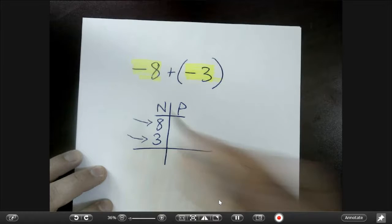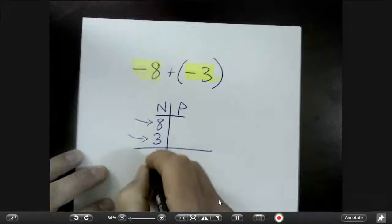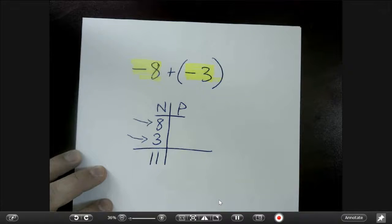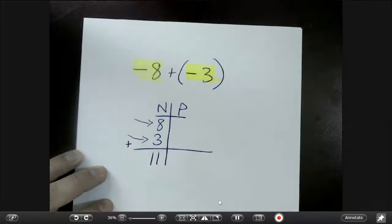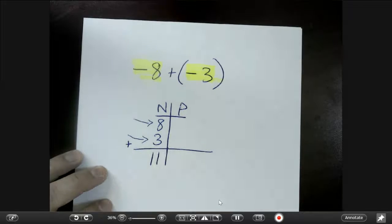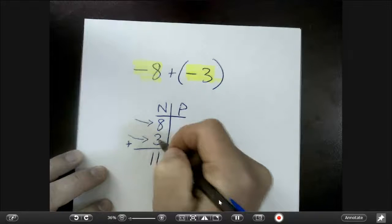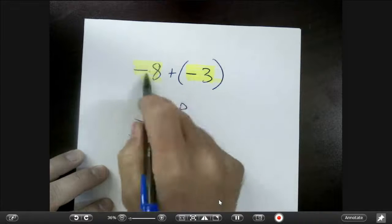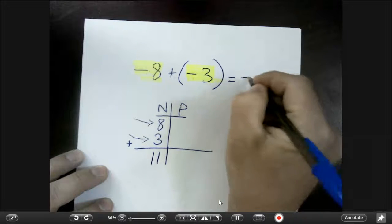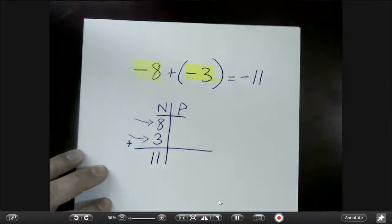So all together, how many points did the negative team score? They scored 11. So in this case, we add them together because there was no crossing over. So negative 8 plus negative 3 is going to be negative 11.